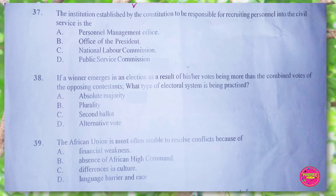Question 38. If a winner emerges in an election as a result of his or her vote being more than the combined votes of the opposing contestants, what type of electoral system has been practiced? A. absolute majority, B. plurality, C. second ballot, D. alternative vote. The correct answer is A. absolute majority.